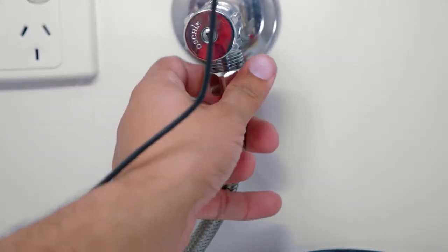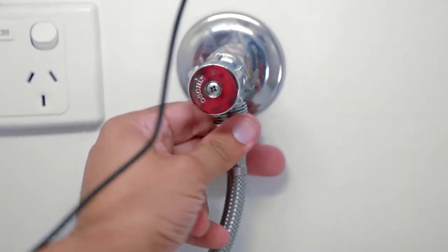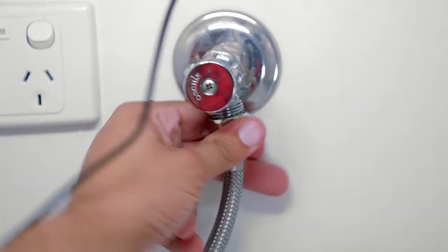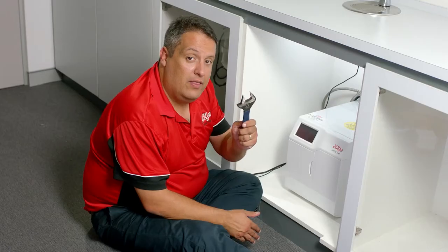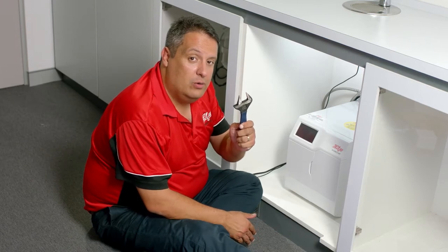With the sufficient space left in the cupboard, we can now finalize our water connection. Do the braided hose up finger tight, and then give it another quarter to half turn with a shifting spanner.